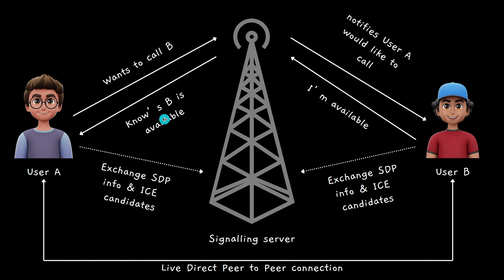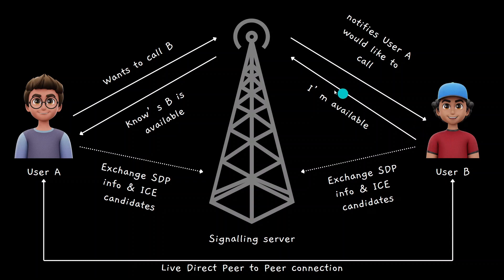There is no direct connection between them, but there is one thing common — both of them are going to be connected to a signaling server. So when User A wants to call User B, User A is going to emit an event to the signaling server. The signaling server is then going to tell User B that User A would like to call. If User B is available at that moment, an event will be sent back and User B will tell User A that he is available to connect.